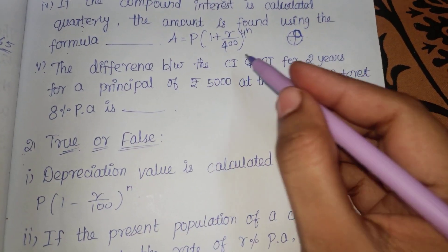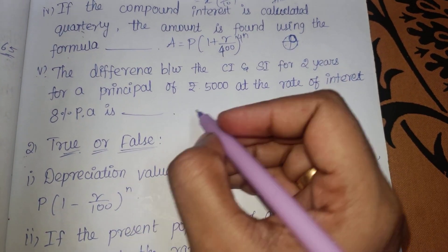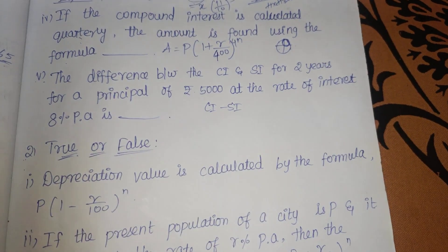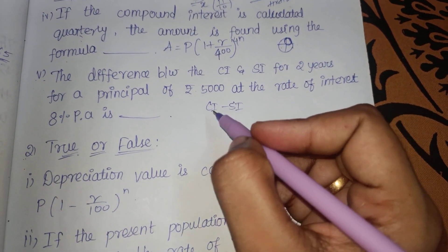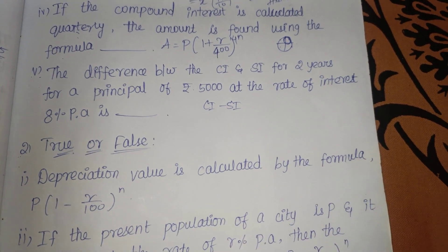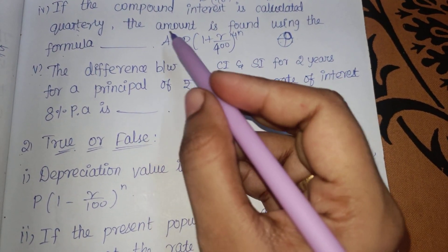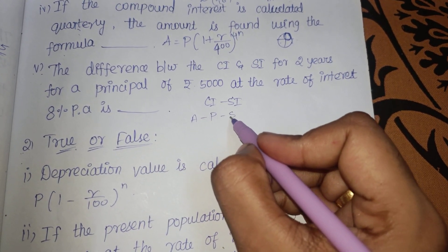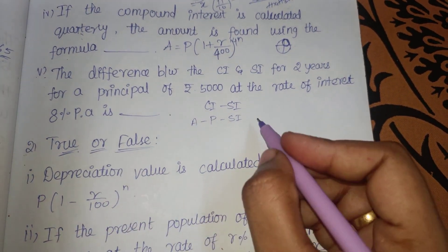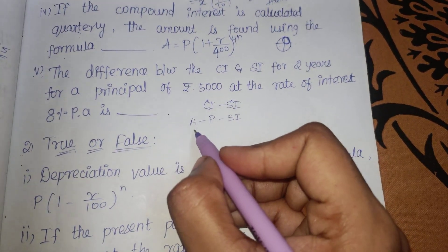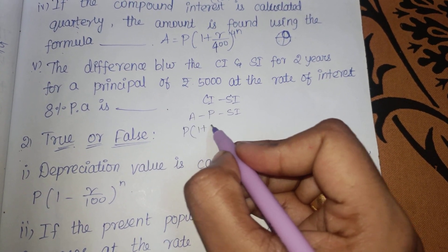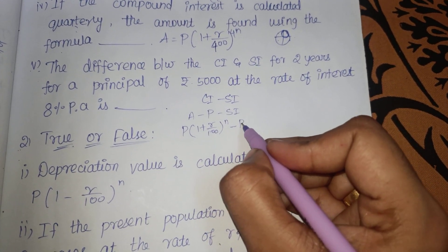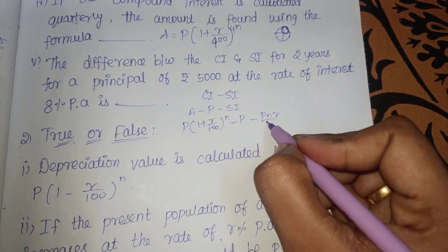The difference between compound interest and simple interest. The compound interest is Amount minus Principal. The formula: CI minus SI = P into 1 plus R by 100 the whole power N, minus P, minus simple interest which is P times R by 100. So if everything is common, P is the common factor. Please substitute R by 100.